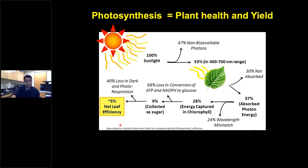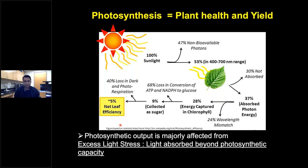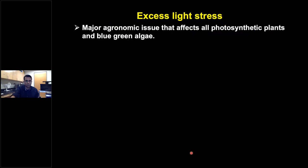One critical factor that limits achieving higher photosynthetic output is the phenomenon of excess light stress, which simply put is the light absorbed by a plant beyond its photosynthetic capacity. Excess light stress is a major agronomic issue that affects all photosynthetic plants and cyanobacteria.